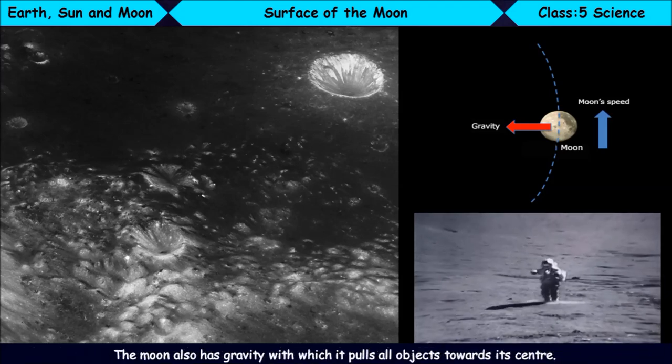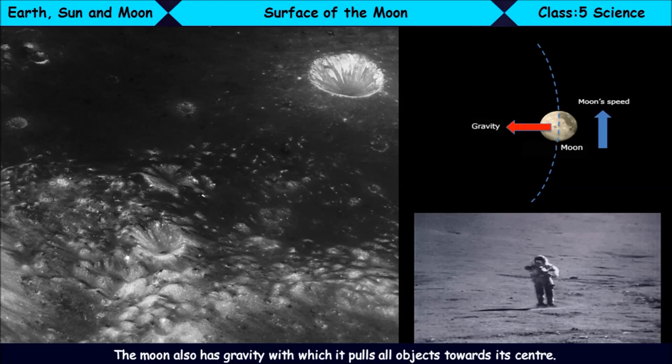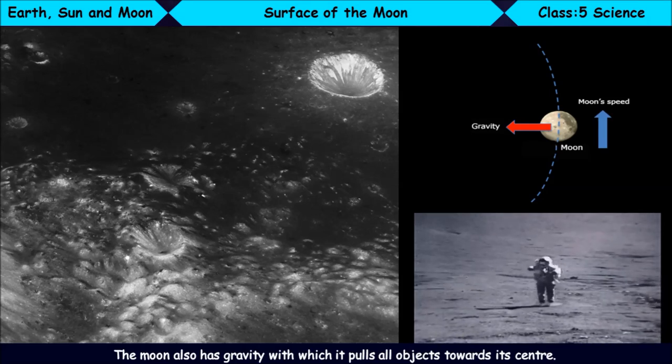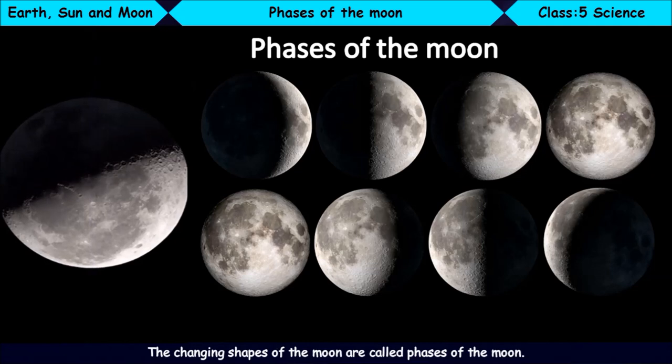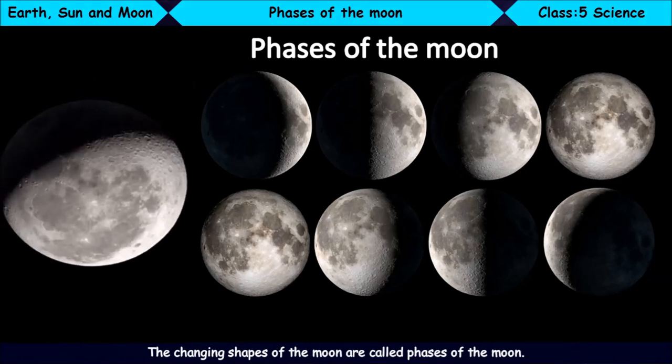The Moon also has gravity, with which it pulls all objects towards its center. Phases of the Moon. When the Moon revolves around the Earth, its shape appears to change day by day. The changing shapes of the Moon are called Phases of the Moon.